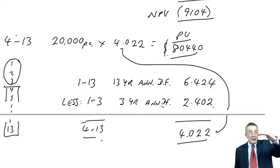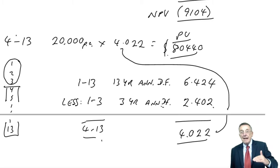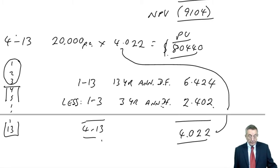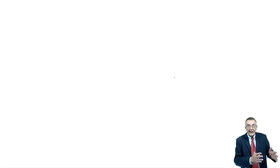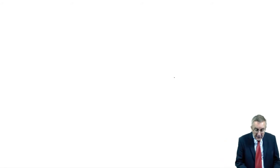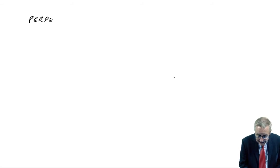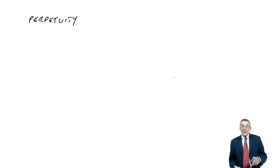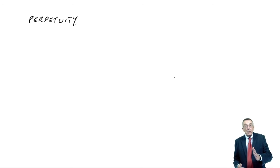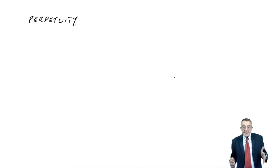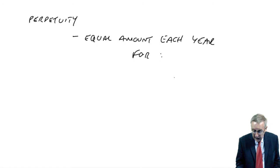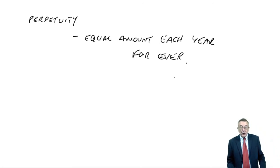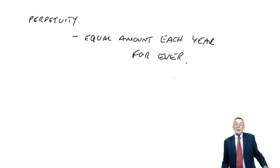Just be careful: annuity factors are only relevant when it is an equal amount each year, and be careful when flows run from something like years 4 to 13. Now let's look at what you might call the ultimate annuity — something called a perpetuity. It is an equal amount each year, but instead of being for 5 or 10 years, it's an equal amount each year forever.